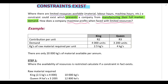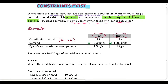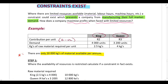In this example the company has two different products: King and Queen. For both products I've given you the contribution per unit — that's just your selling price per unit minus variable costs — and the demand. King has demand of 4,000 units and Queen has demand of 3,200 units. I also tell you the kilograms of raw material required per unit, and lastly that there are only 20,000 kilograms of material available per annum. As soon as you see that, it means we have a potential constraint or limiting factor.